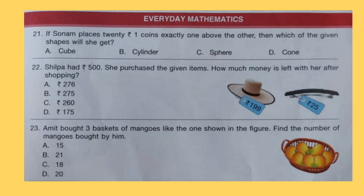Question 23: Amit bought 3 baskets of mangoes like the one shown in the figure. Find the number of mangoes bought by him.